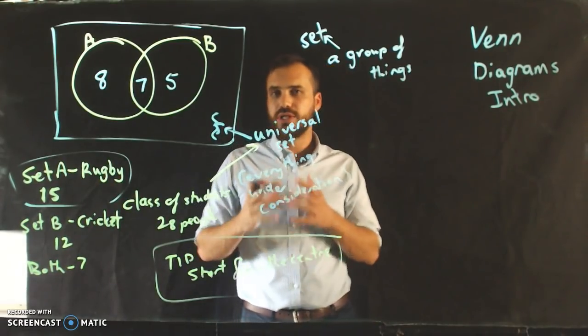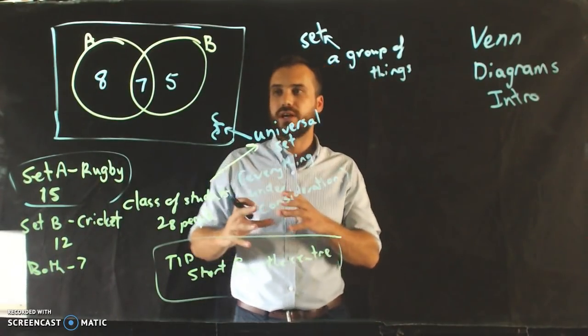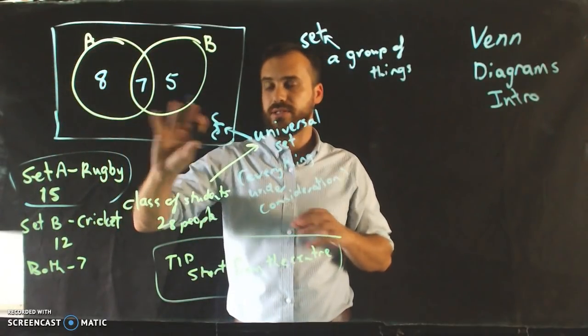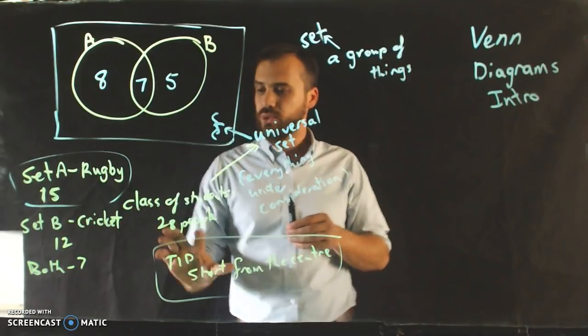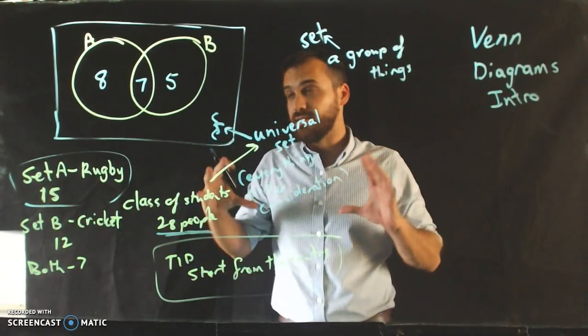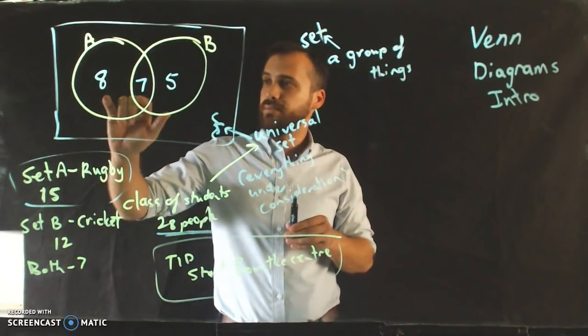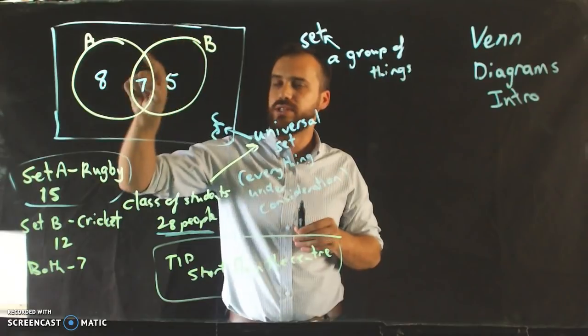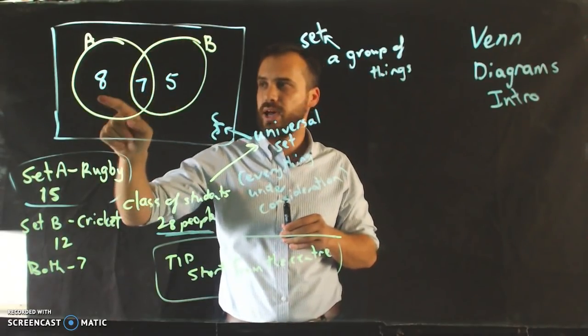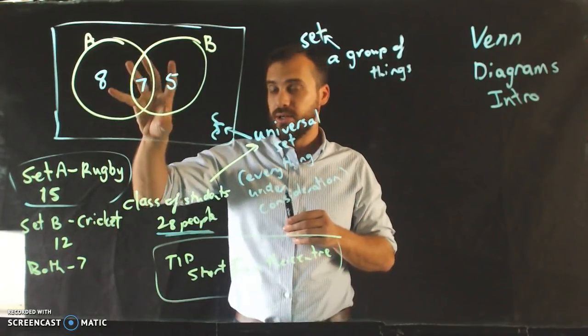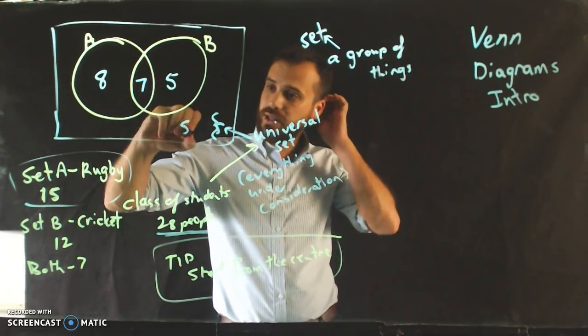So we're nearly done here, but we just need to then figure out what number goes outside of this. So we've got 28 people in the class. Remember, that was our universal set. Now, we've got 8 plus 7 is 15 plus 5, 20 people are accounted for in these two circles. 7 play both, 8 play rugby, 5 play cricket. So that adds up to 20, which means that 8 people are out here.